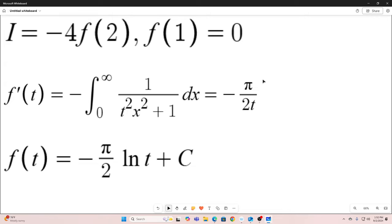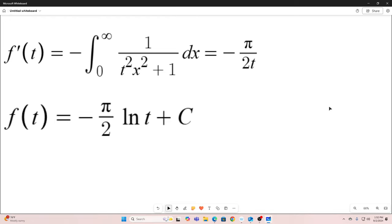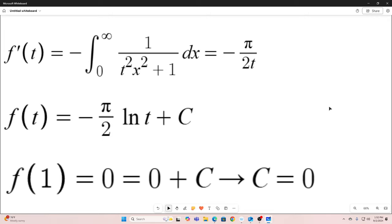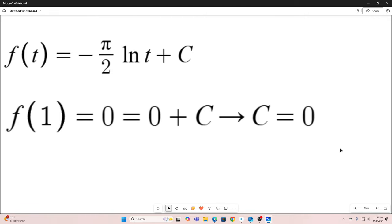So integrating negative pi over 2t gives us negative pi over 2 natural log t. And then of course we have a constant of integration, which we can find the value for by using the fact that f of 1 is equal to 0. So using f of 1 is equal to 0, we find that 0 is equal to 0 plus c, which means that our c is equal to 0, meaning that our f of t is simply negative pi over 2 natural log t.